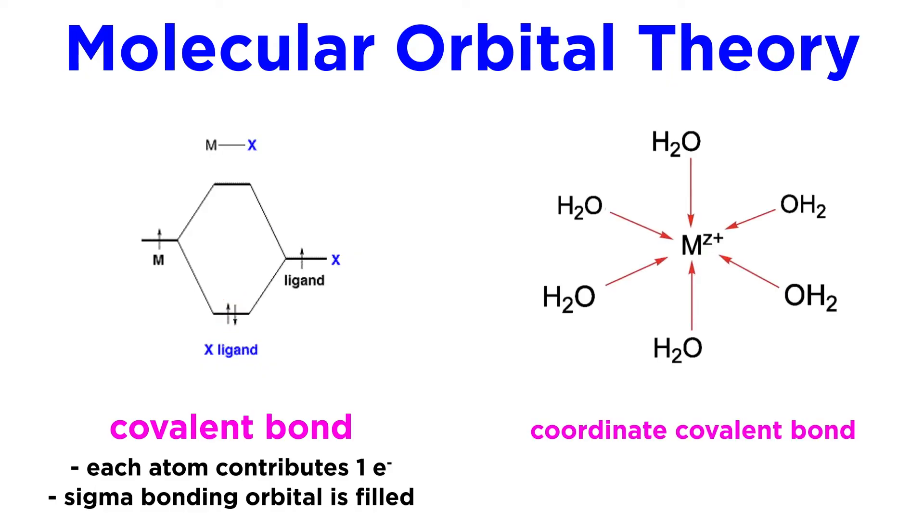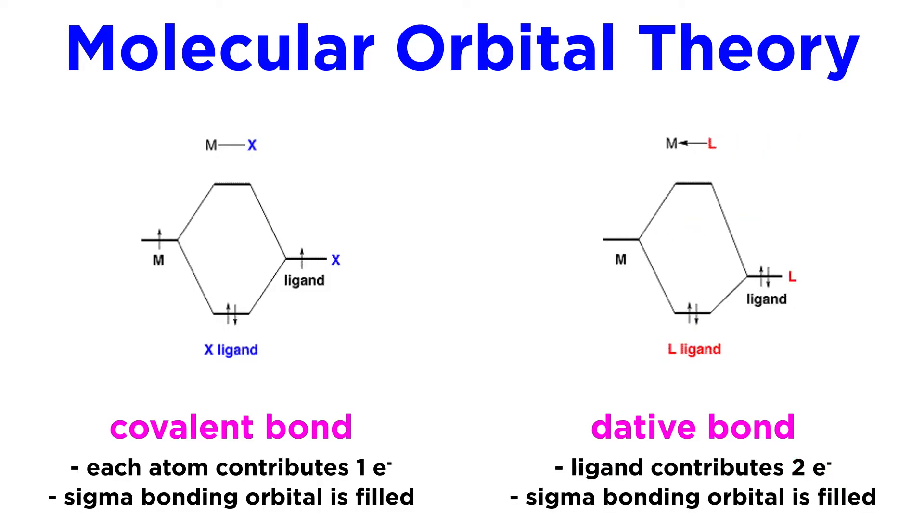However, in most situations, a more accurate description of metal-ligand bonding is the coordinate covalent bond, or dative bond. In a dative bond, the metal acts as a Lewis acid and the ligand acts as a Lewis base, contributing both electrons to the bond. If using molecular orbital theory, that would look like this, with the ligand usually sitting at a lower energy than the metal and contributing both of these electrons to the sigma bonding orbital.